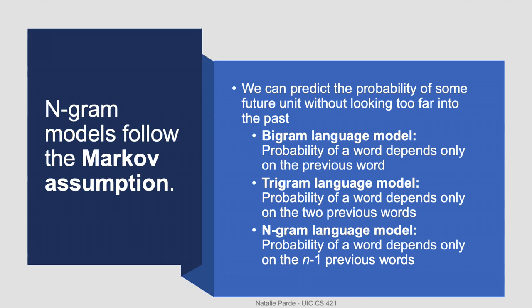N-grams follow the Markov assumption, which we of course already talked about with hidden Markov models. To reiterate, the Markov assumption just states that we can predict the future based only on the most recent past. In terms of n-grams, this means that in a bigram language model, the probability of a word depends only on the single most recent word. In a trigram language model, it depends only on the two most recent words, and so forth.